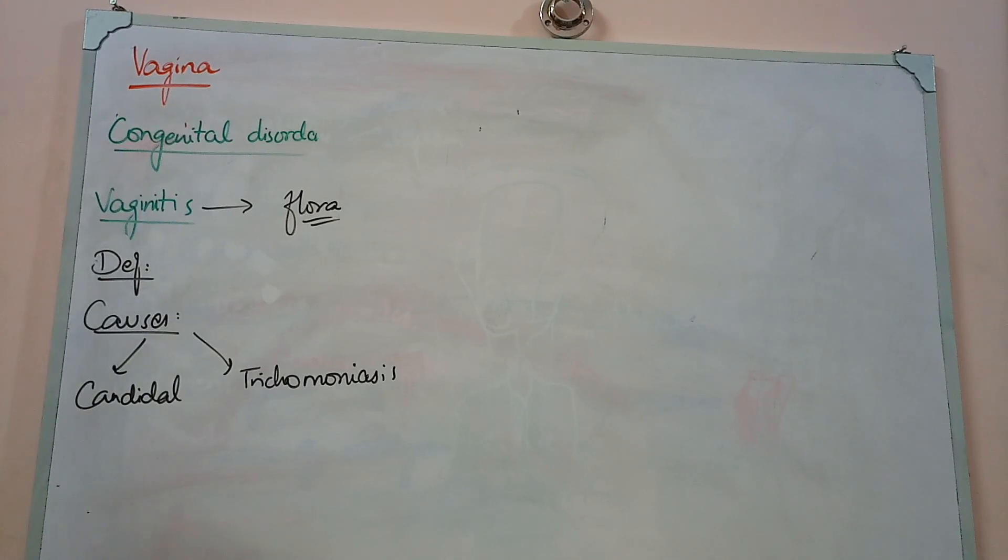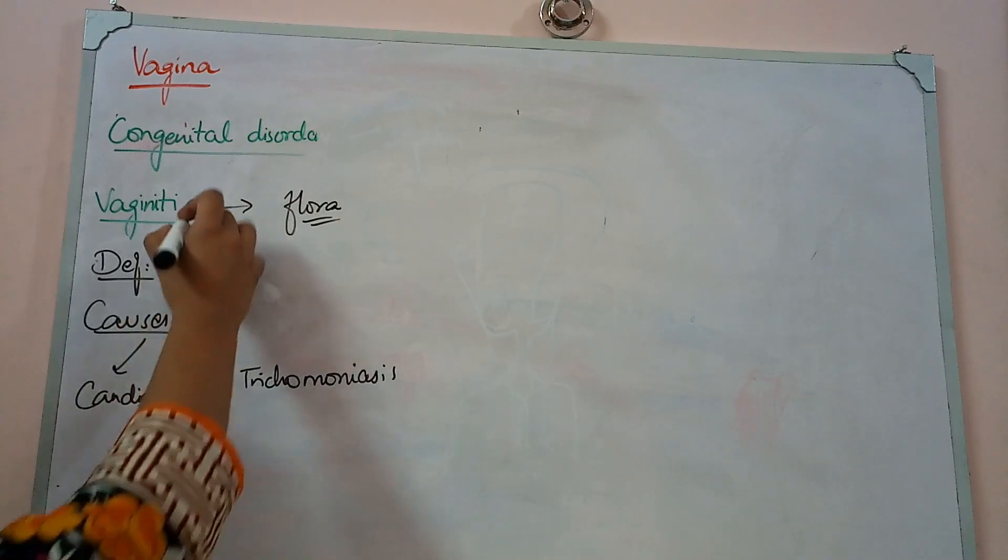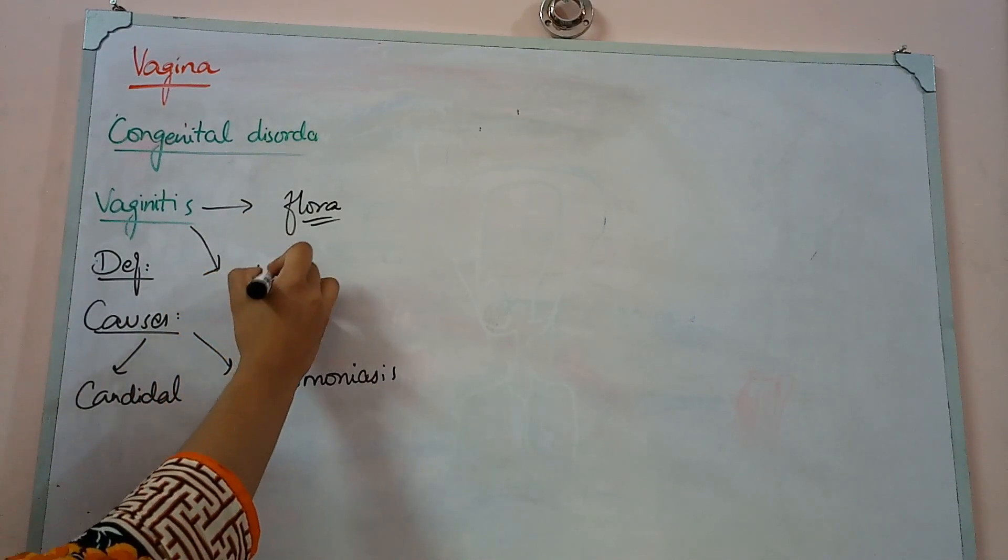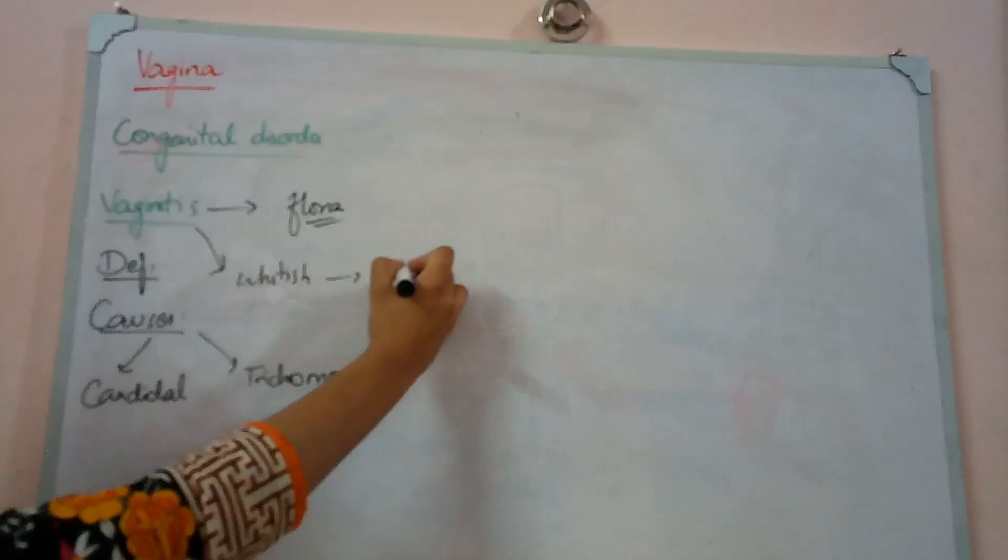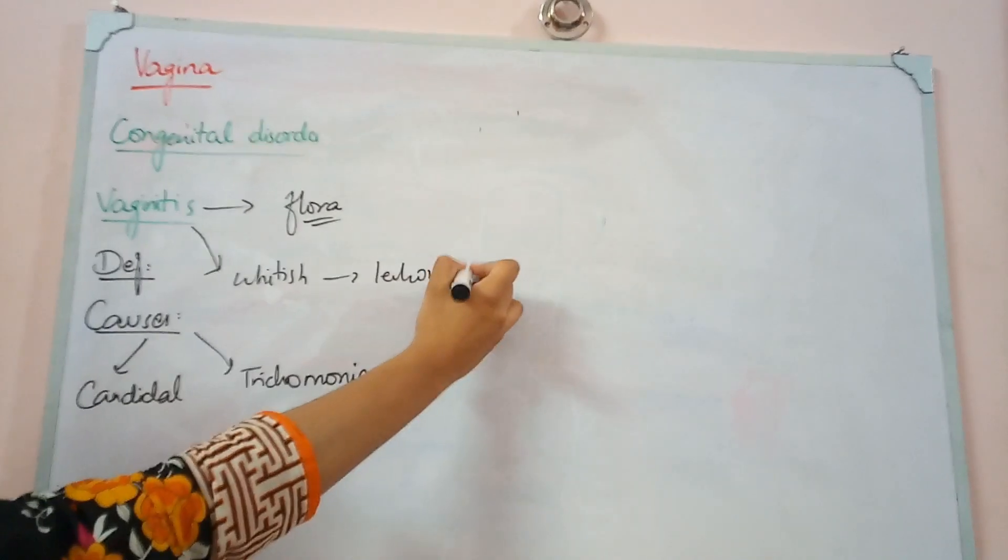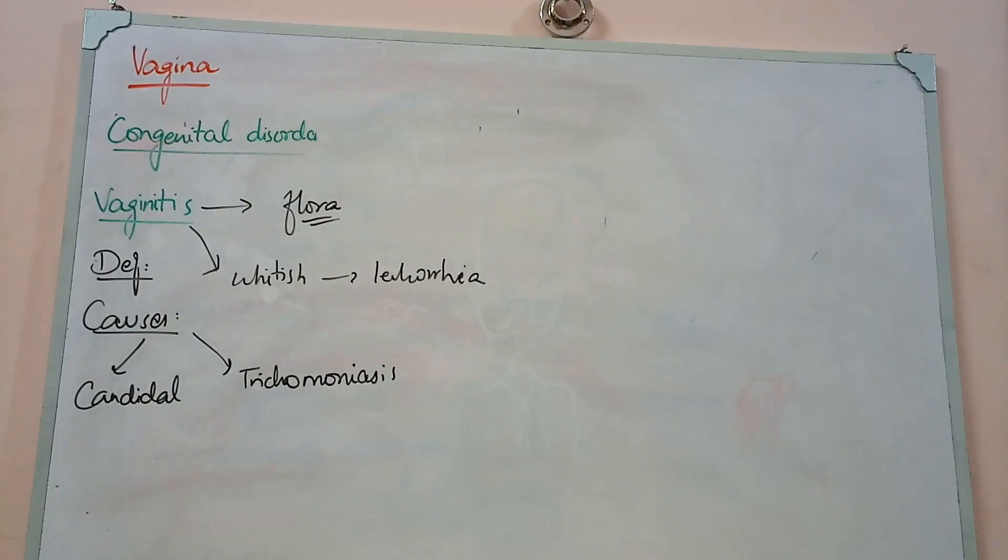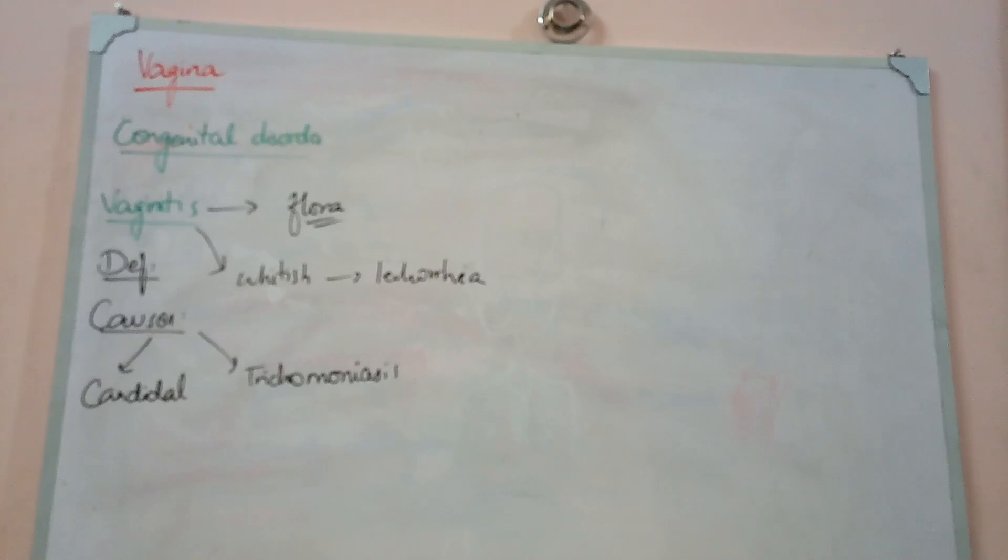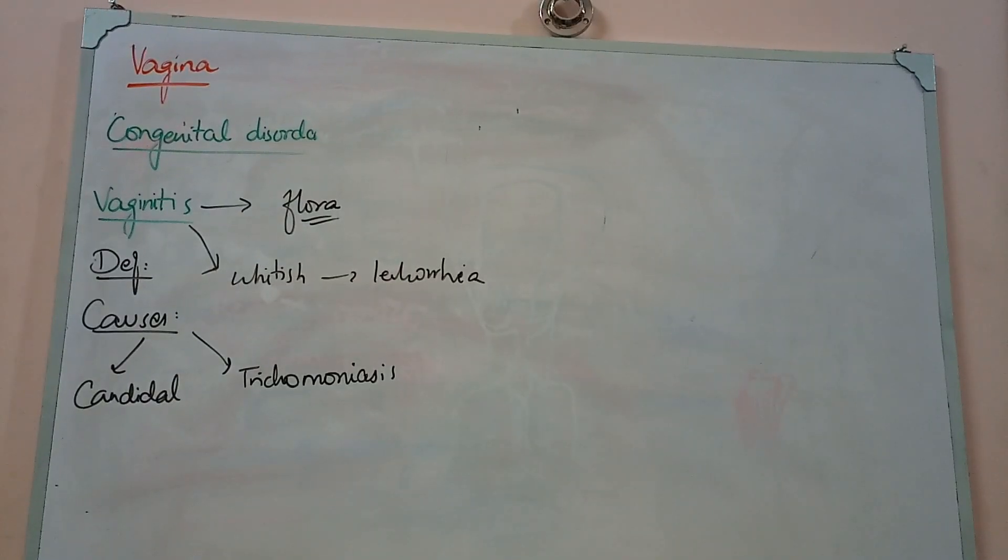Vaginitis has many clinical consequences, but the main thing involved in inflammation is a whitish discharge from vagina, which we also call leucorrhea. This is very common. Every female knows about leucorrhea because it is a whitish vaginal discharge. Leucorrhea doesn't have only one cause - it occurs in many conditions, but one of those causes is vaginitis.